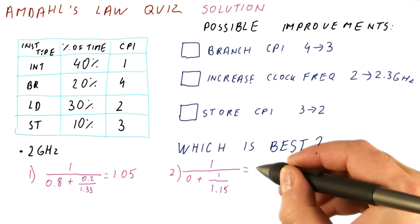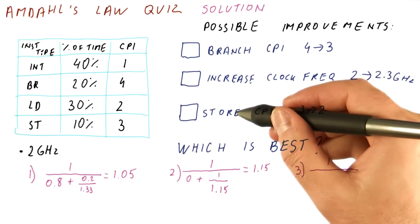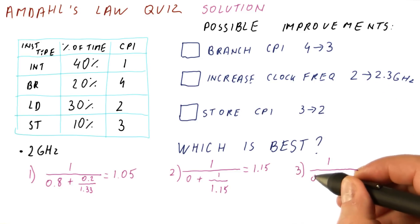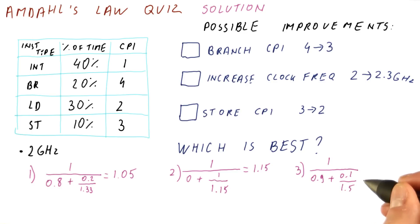The third option is for stores. The unaffected fraction is 0.9. The affected fraction is 0.1. The speedup of going from 3 to 2 is 1.5. And when we compute that, we get 1.034. So it's a very small speedup, even smaller than we got for branches.